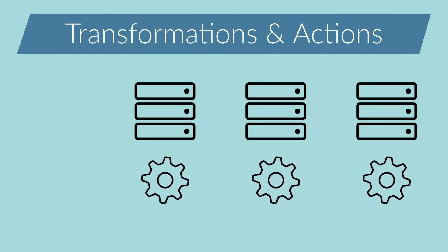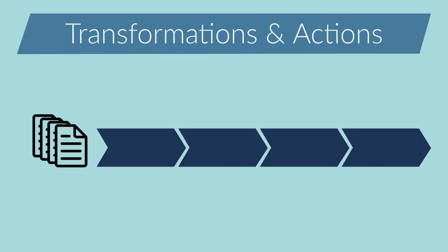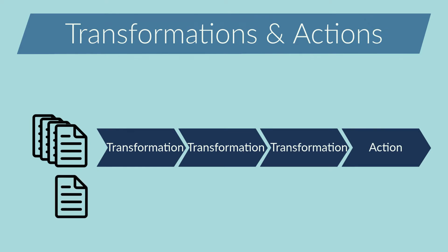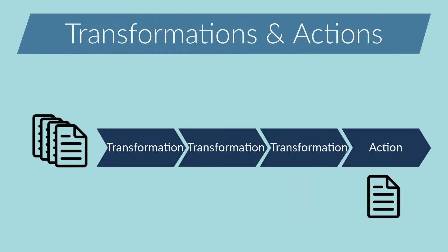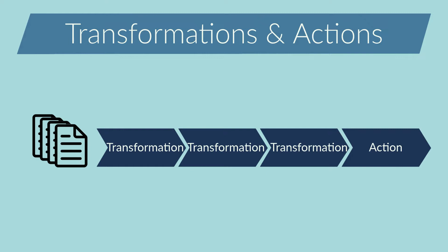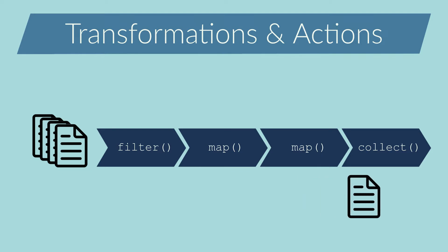What are the available operations? Transformations and actions. Each pipeline can have several transformations, but always has a single action at the end. The dataset will travel from transformation to transformation until the last action. In fact, the action operation is the one which triggers the pipeline. If there is no action operation, nothing will be done — not even the first transformation. The output of the previous transformation will be the input of the next transformation, and so on until the action.